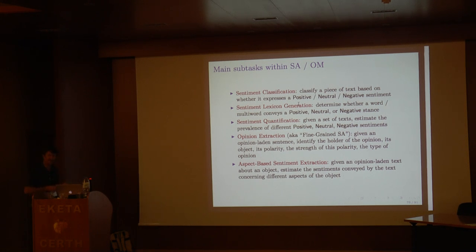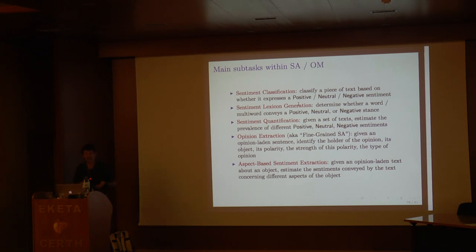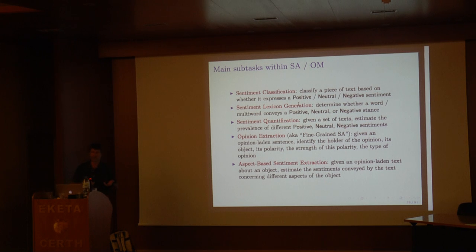In opinion extraction, given an opinionated sentence, you identify the holder of the opinion, the object, its polarity (positive or negative), the strength of that polarity, and even the type of opinion — whether it is a functional judgment like 'this tablet has a very wide angle,' a moral judgment, or an aesthetic judgment. There are very different types of opinions.